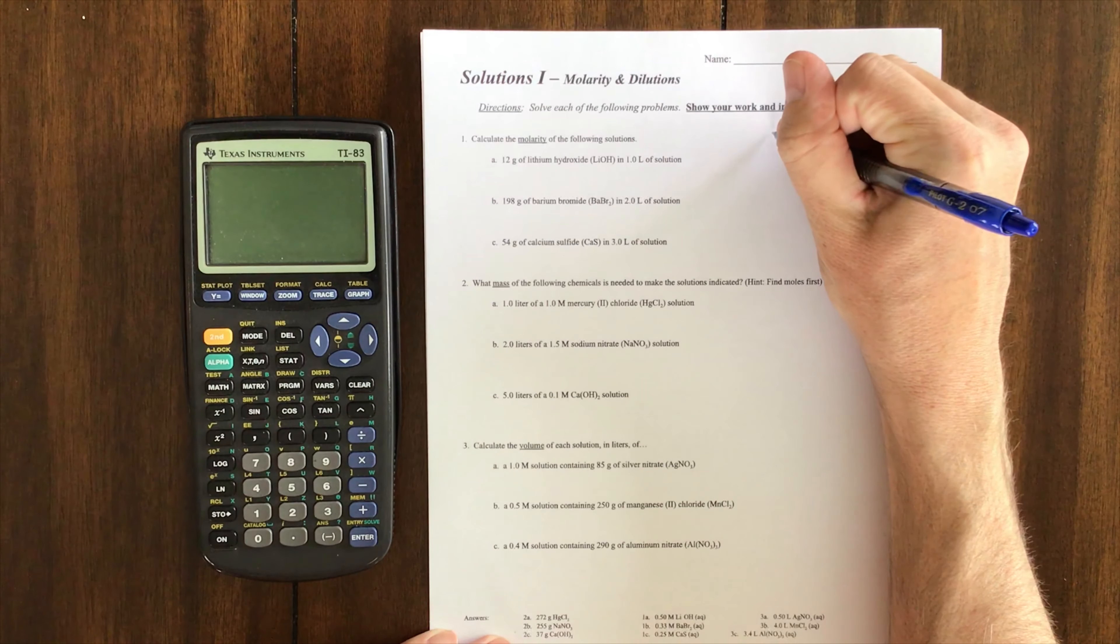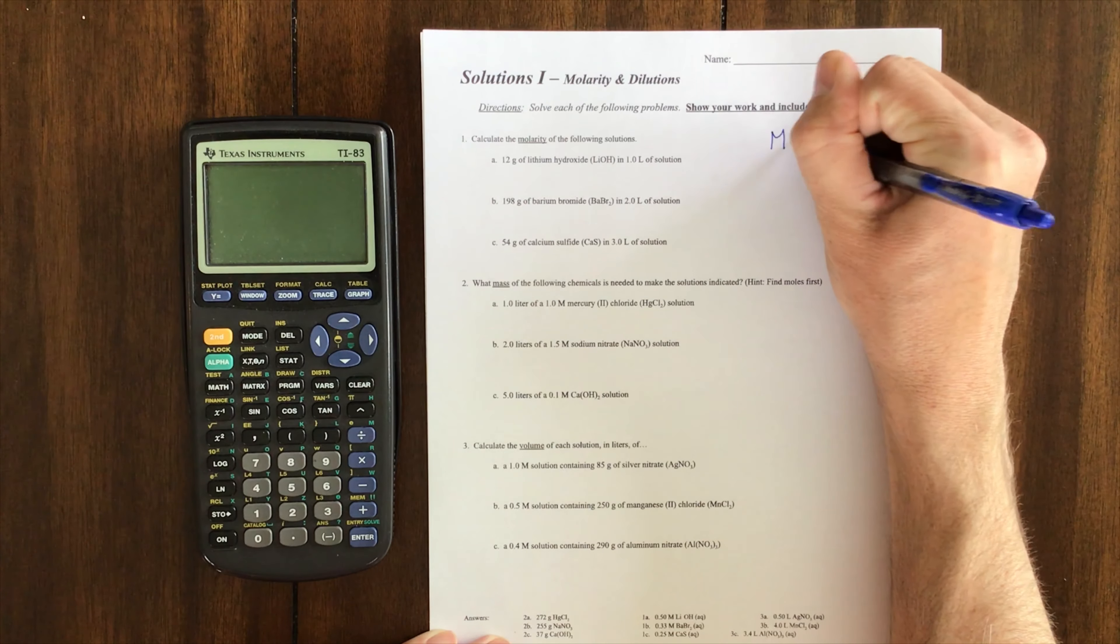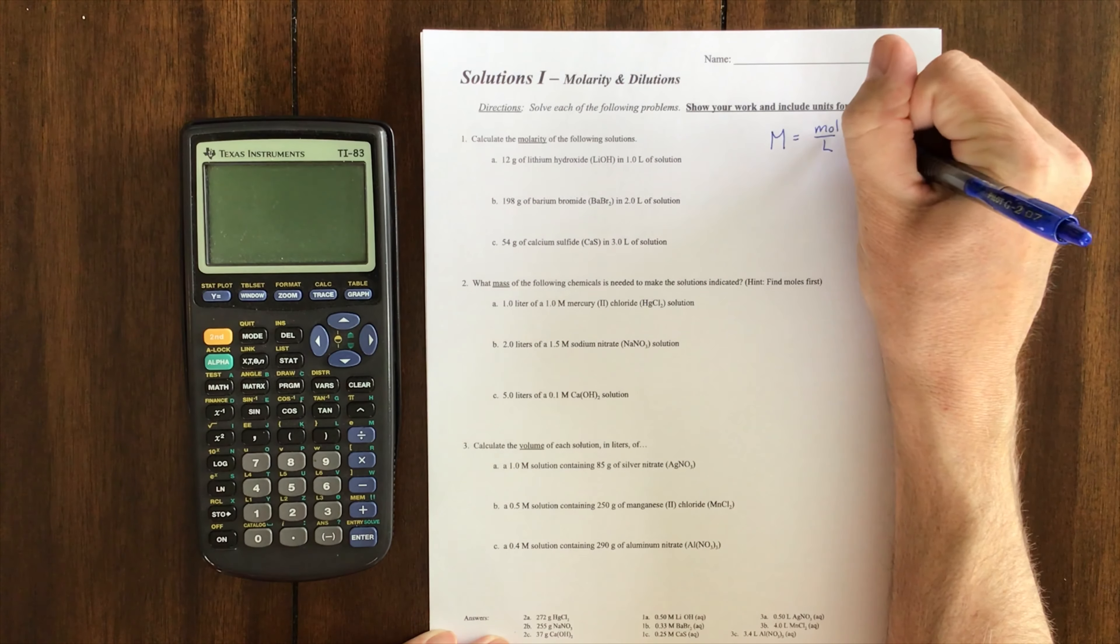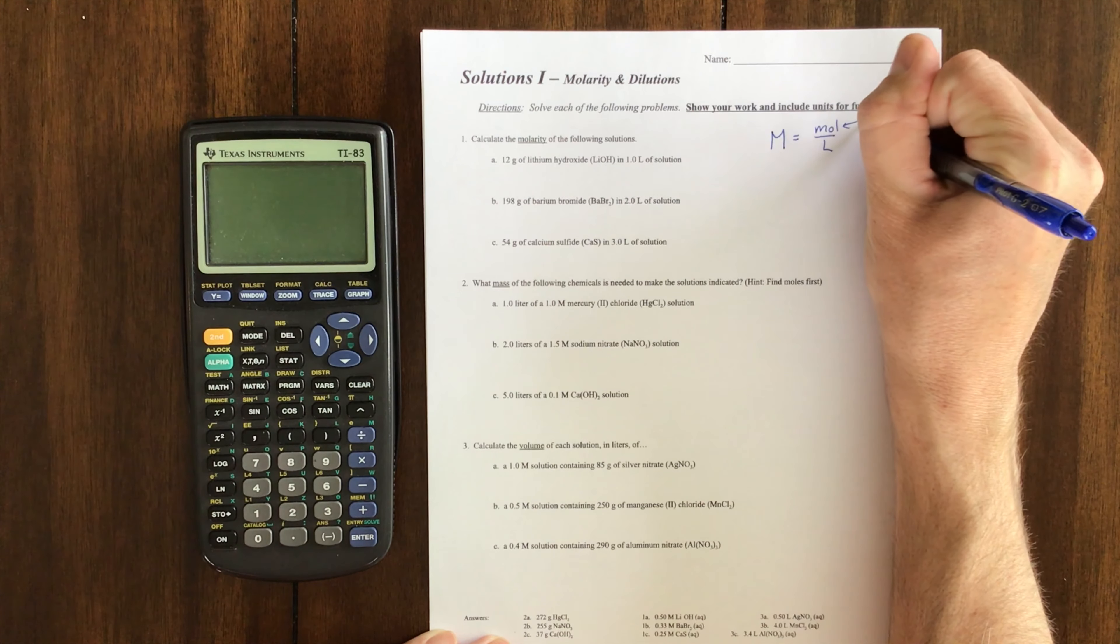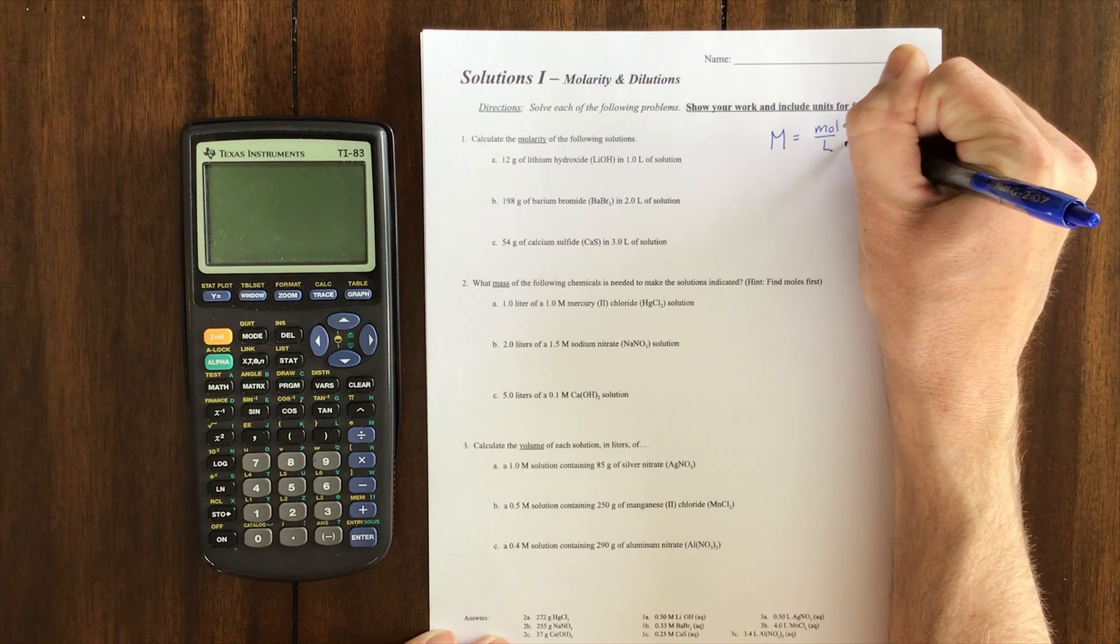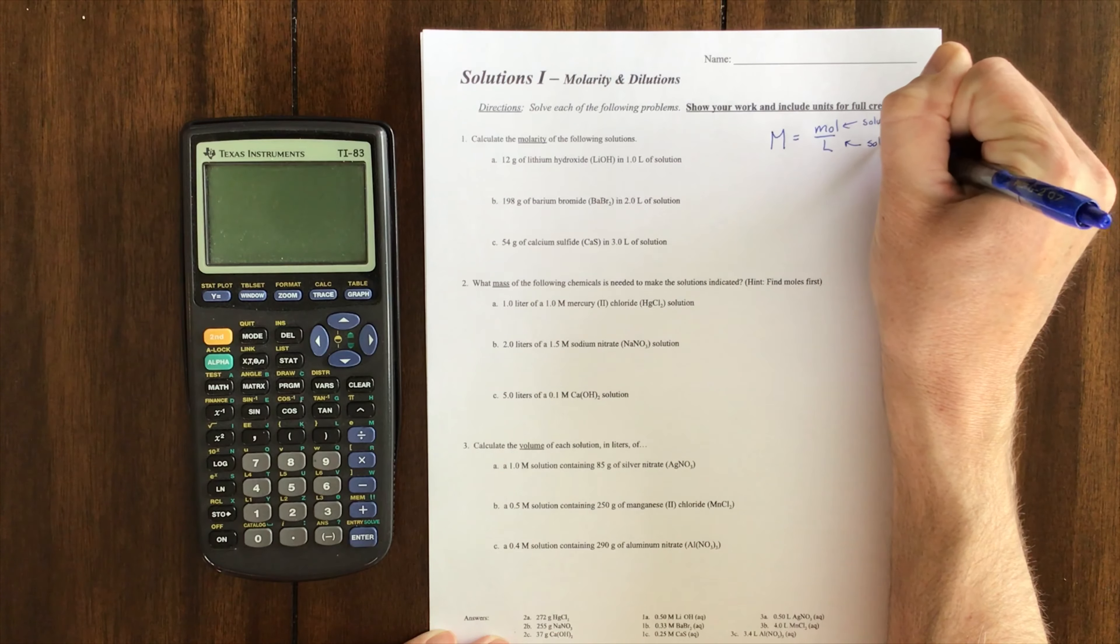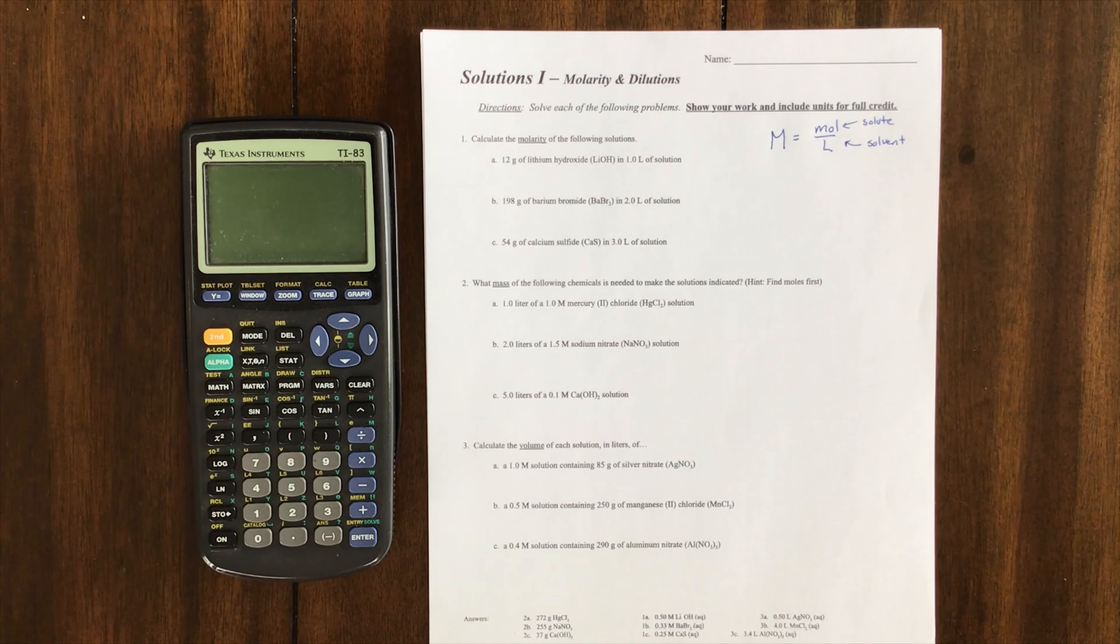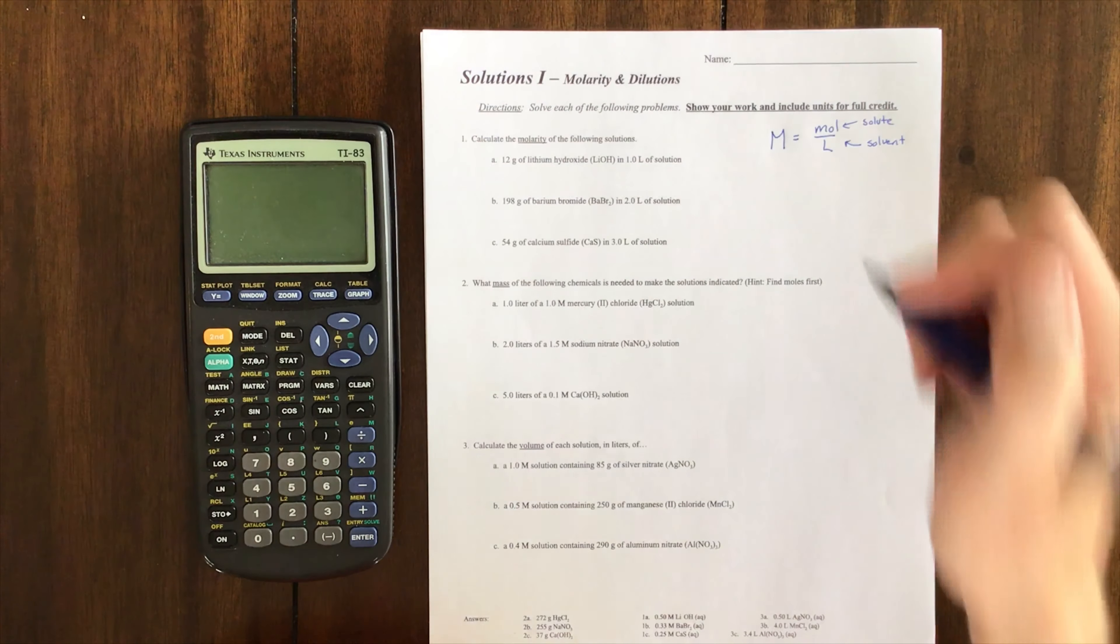Reminder that molarity equals moles over liters. Basically, that's the amount of stuff you have—the solute, how much you have dissolved in the solvent, the liquid. So it's a ratio. Those are my three units; M is my molarity, which is basically the way of describing a concentration.